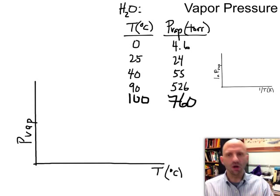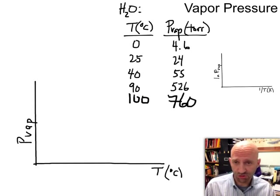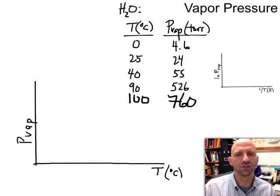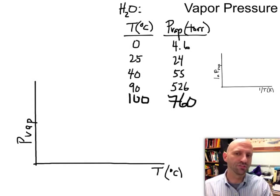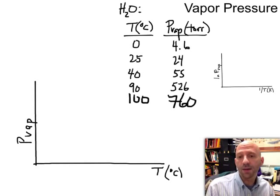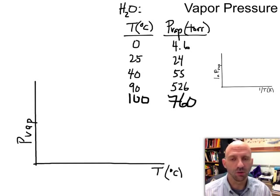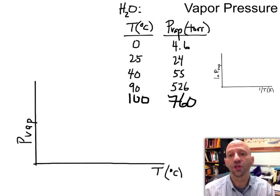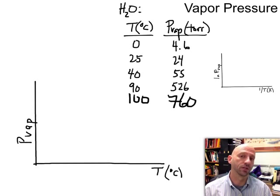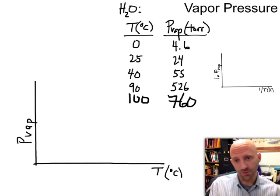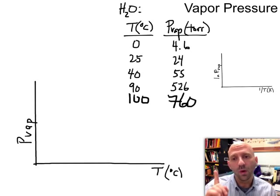So our water here in Hackensack, New Jersey, as we know, boils at 100 degrees. So that's really the rigorous definition of boiling point. The temperature at which a liquid's vapor pressure equals the atmospheric or surrounding pressure. Now there's another definition I want you to know about, and that is something called the normal boiling point. That's the temperature at which a liquid's vapor pressure equals specifically 1 atm.